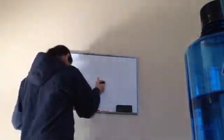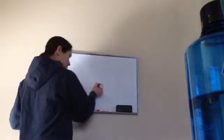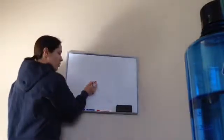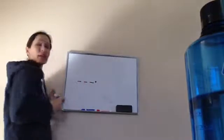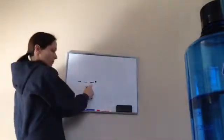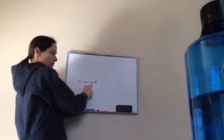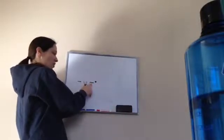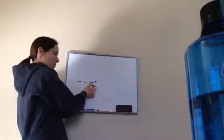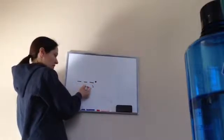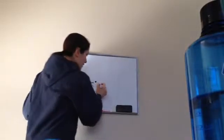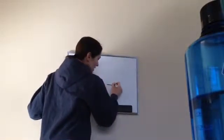Let's review something quickly. Here's my decimal — what are these three spots to the left called? They're called the whole numbers. Exactly right. And what's this first whole number called? The ones place, tens, and hundreds.